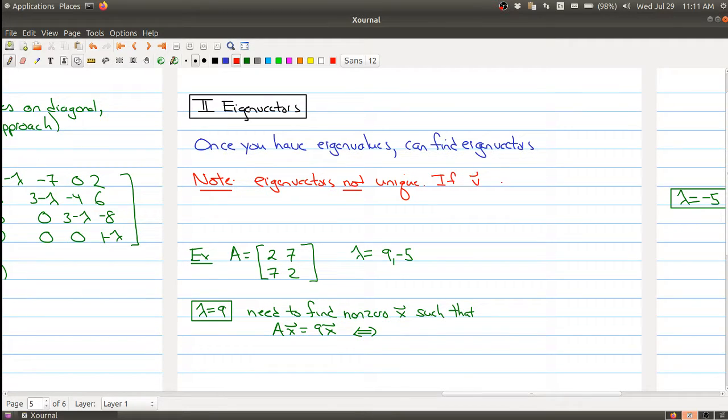So if v satisfies Av equals lambda v, then so does the vector cv, because I can take the c and pull it all the way out. This is equal to c times lambda times v, and then I can switch the order around and I get lambda times cv. So once you have a vector v that satisfies this equation, that means it's an eigenvector.